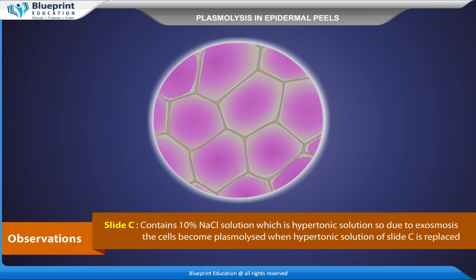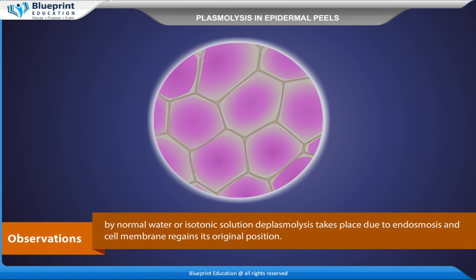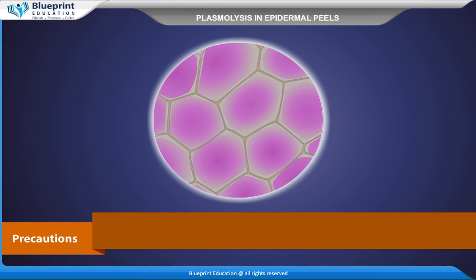Due to exosmosis, the cells in slide C become plasmolyzed. When the hypertonic solution of slide C is replaced by normal water or isotonic solution, deplasmolysis takes place due to endosmosis, and the cell membrane regains its original position.